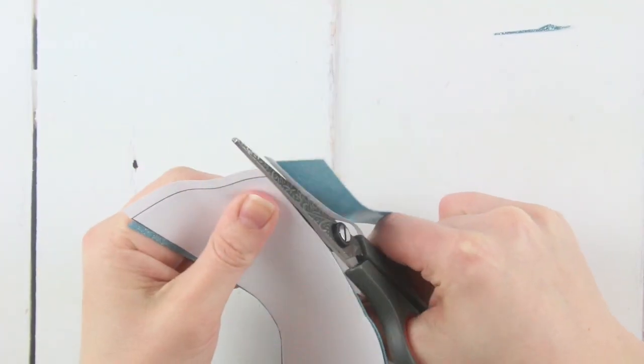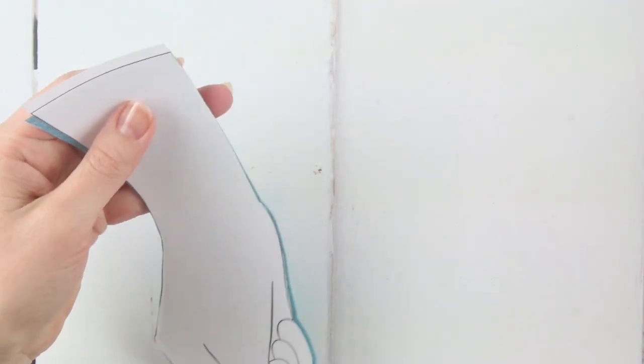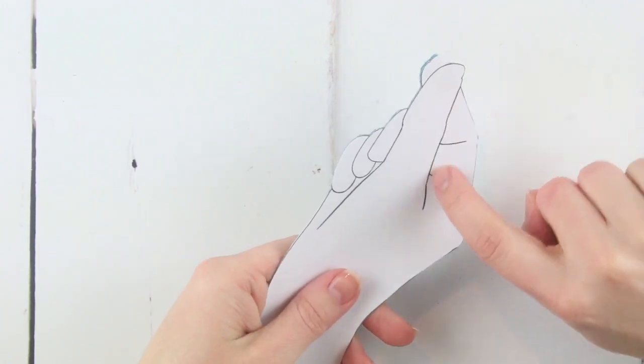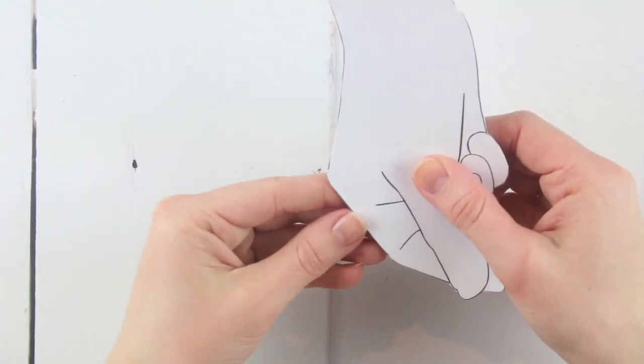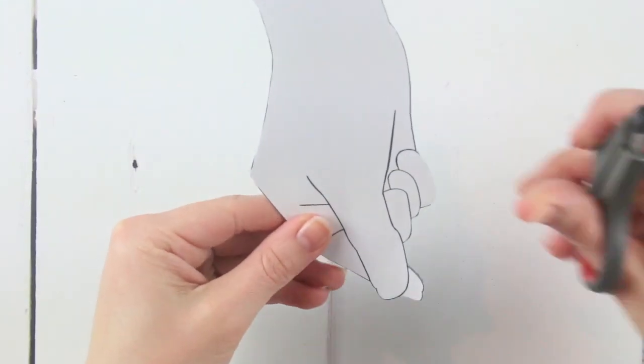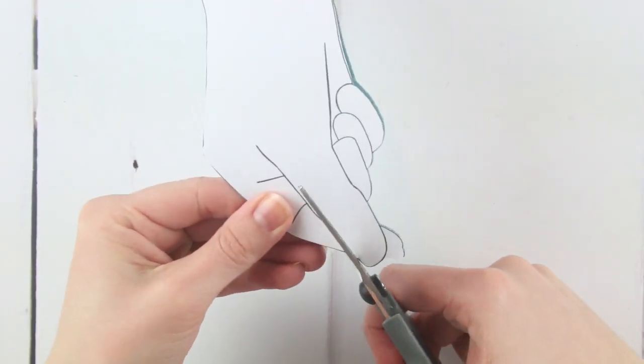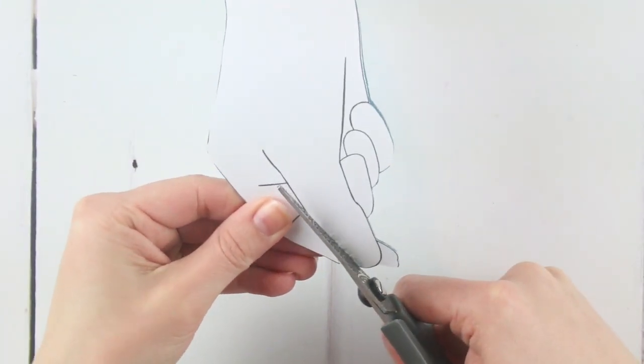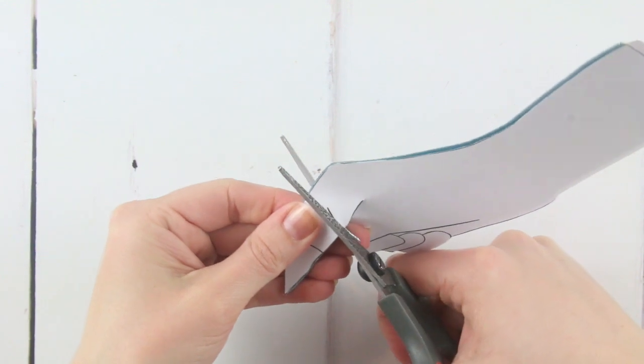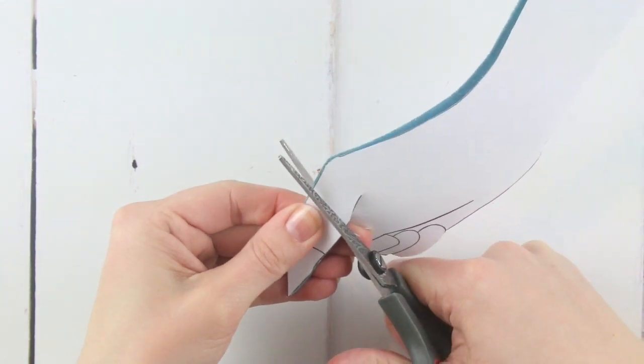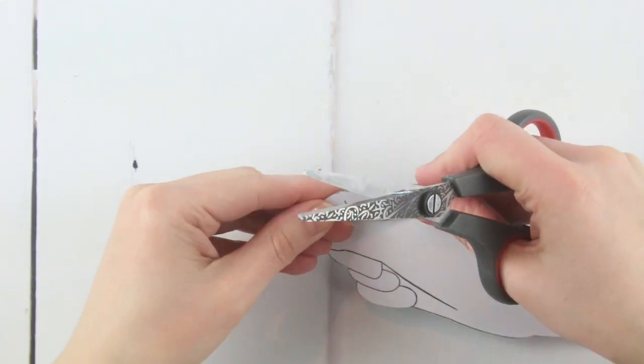Keep a firm hold of the template to the foil so it doesn't shift while you're cutting. Still holding the template and foil together, we'll now cut out some of the internal lines of the template, starting with the back of the thumb. Cut along the line of the illustration. Then cut along the two small lines for the creases in the hand.